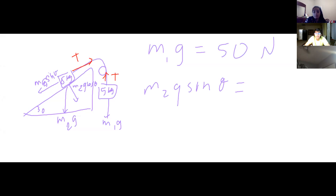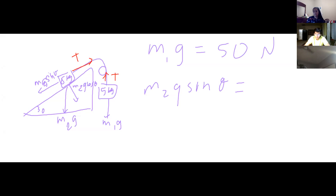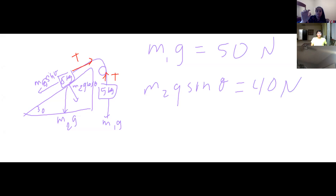m2·g is 8 times g, which is 80. Then 80 times sine of 30 is 40. So we have 40 newtons. Since m1·g (50) is greater than m2·g·sinθ (40), the system is going to move to the right.